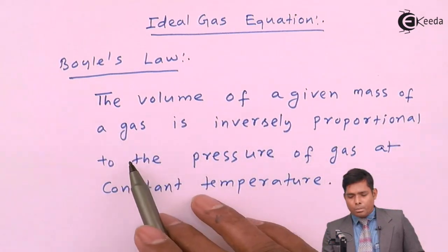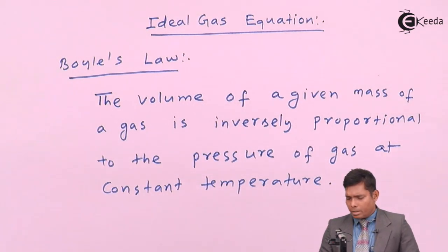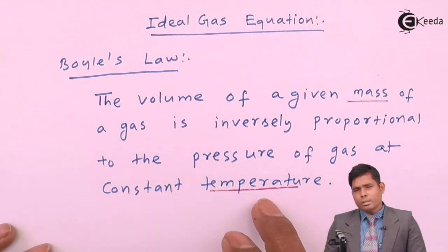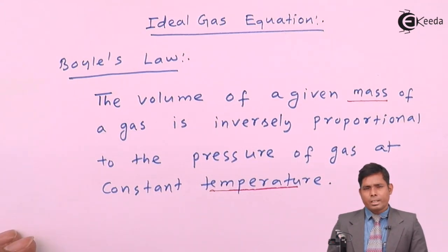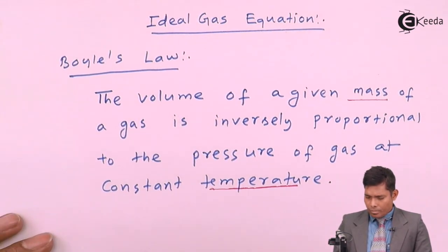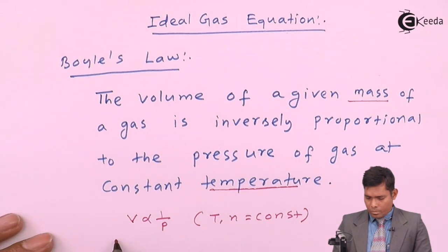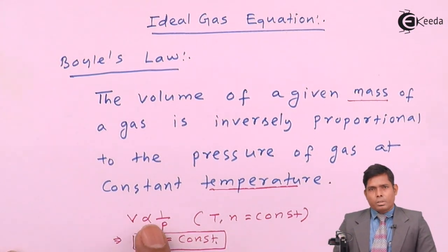The volume of a given mass of a gas is inversely proportional to the pressure of a gas at constant temperature. If you keep the number of moles and the temperature constant, then volume varies inversely with pressure — if you increase the pressure, volume will decrease and vice versa. This means V is inversely proportional to P, and PV is constant. This is Boyle's Law.